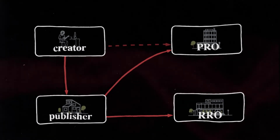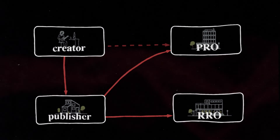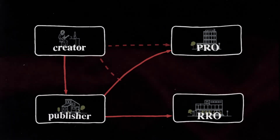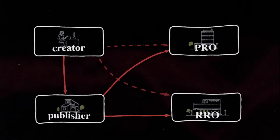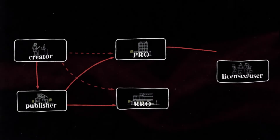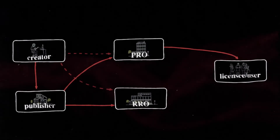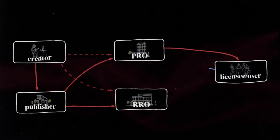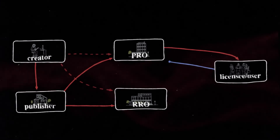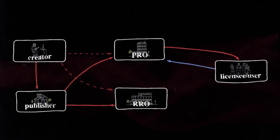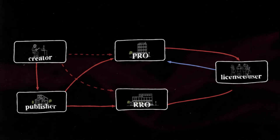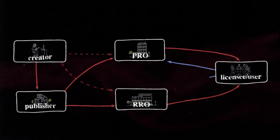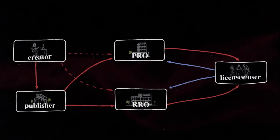Music creators do not have the ability to register works with RROs unless they are self-published. The PRO grants a performance license to a licensee or music user in exchange for a performance license fee, and the RRO grants a mechanical license to the licensee in exchange for a mechanical license fee.